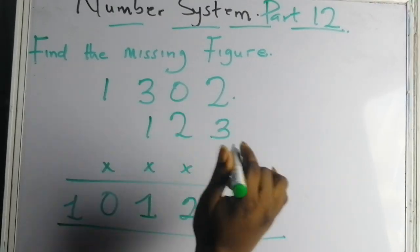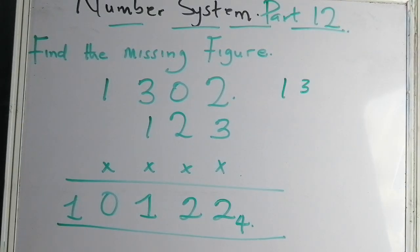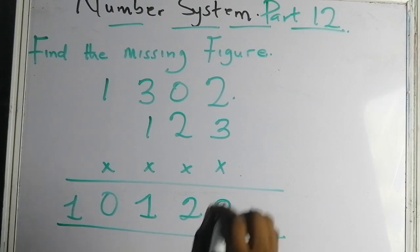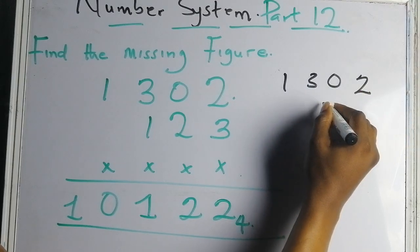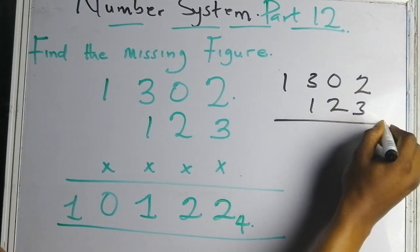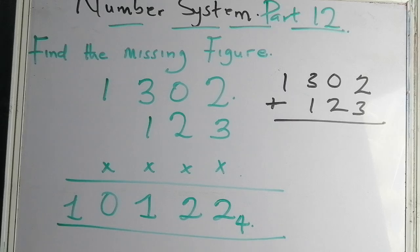Let me do the analysis. You have 1302 and 123. We are doing this addition in base four. Three plus two equals five — as I mentioned in previous parts.